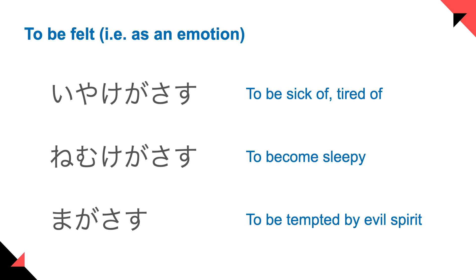NEMUKE-GA SASU — when you're sleepy, you say NEMU-I. NEMUKE means sleepiness. So NEMUKE-GA SASU means to become sleepy.